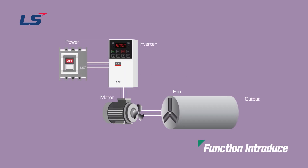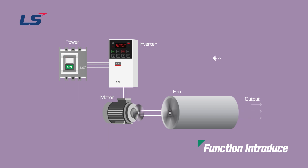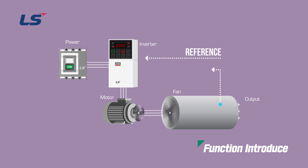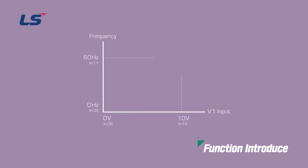Analog voltage and current input through the AC drive control terminal can be used for various commands such as operating frequency setting or torque command, and can also be used as feedback during PID control. However, the minimum and maximum values of commands or feedback may vary depending on the load system.